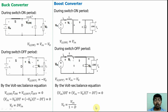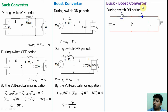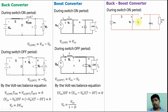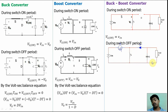Now we will discuss the average output voltage calculation for the buck-boost converter, also using the volt-second balance equation. During the switch ON period, the switch is short-circuited; the diode does not allow current from cathode to anode, so the diode becomes reverse-biased. Applying KVL around the loop: VL(on) = Vin. During switch OFF, when the switch is open, the charged current in the inductor discharges through the load to the diode in the forward direction — because the diode allows current from anode to cathode.